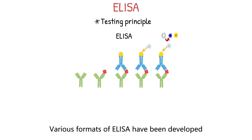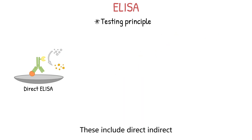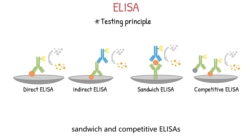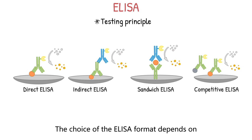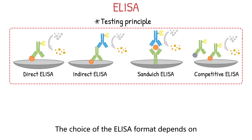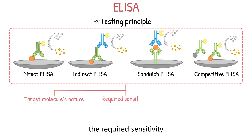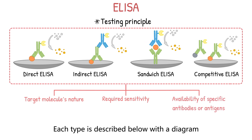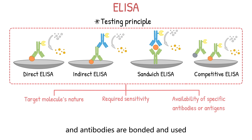Various formats of ELISA have been developed to cater to different testing needs. These include direct, indirect, sandwich, and competitive ELISAs, each with their unique advantages and suitable applications. The choice of ELISA format depends on factors such as the target molecule's nature, the required sensitivity, and the availability of specific antibodies or antigens. Each type is described below with a diagram illustrating how the analytes and antibodies are bonded and used.